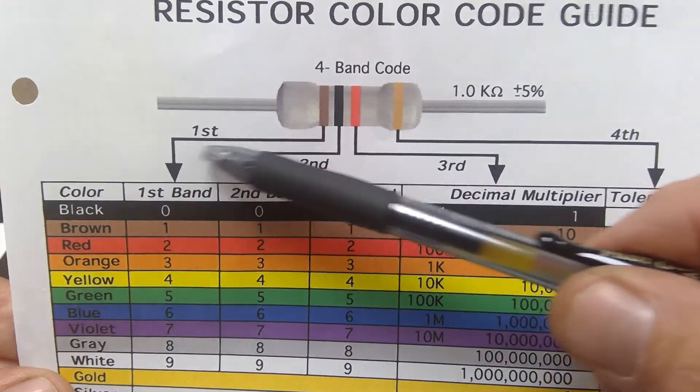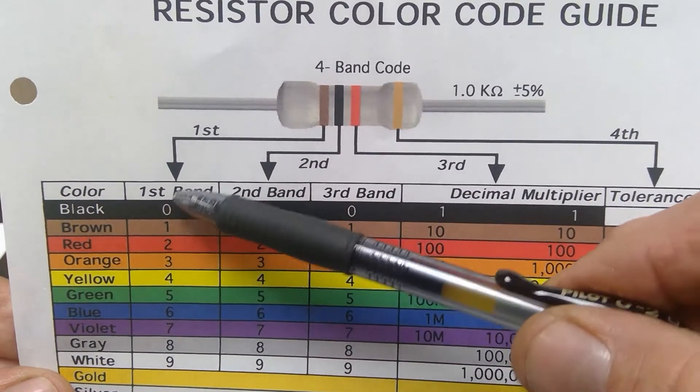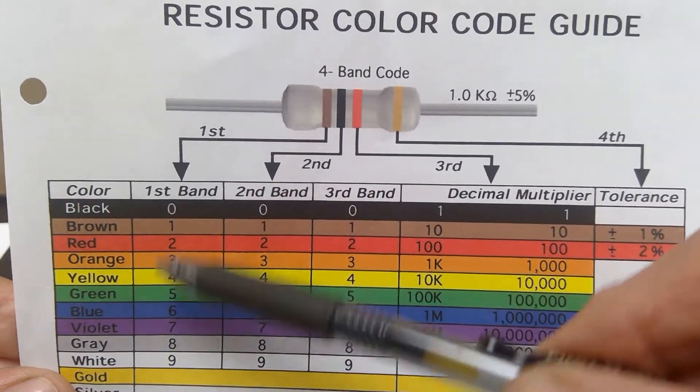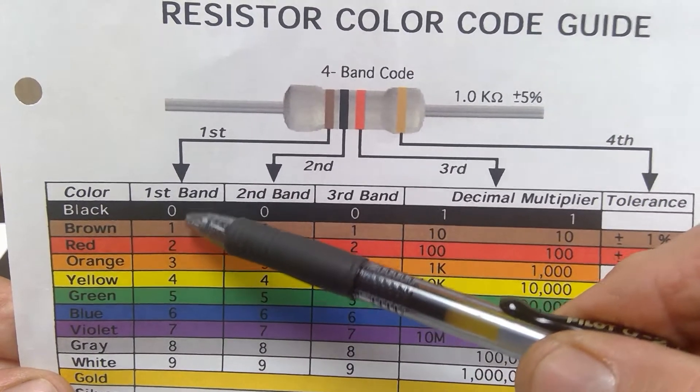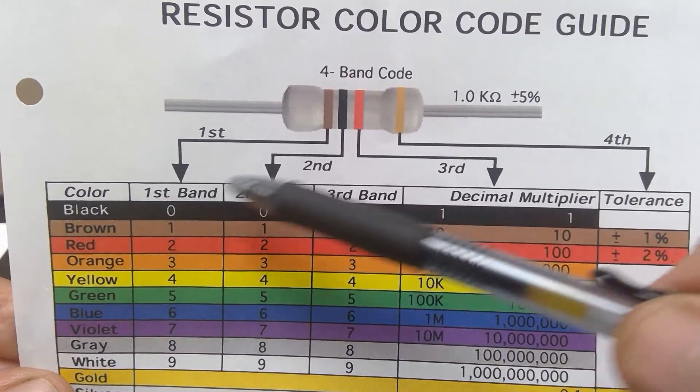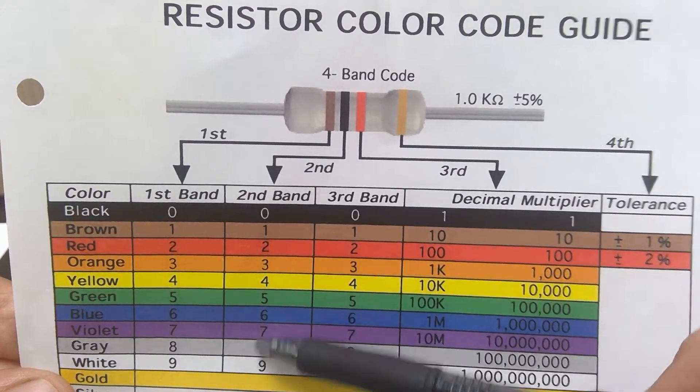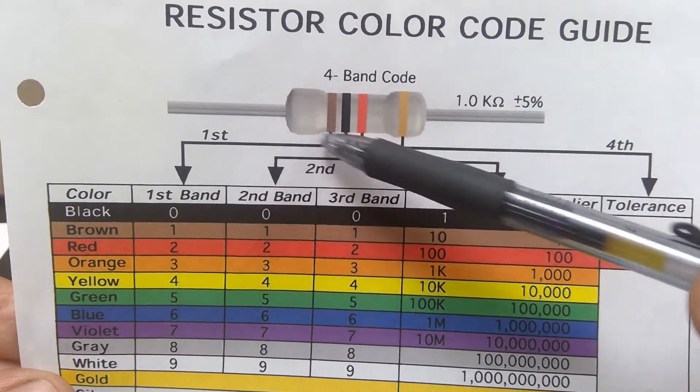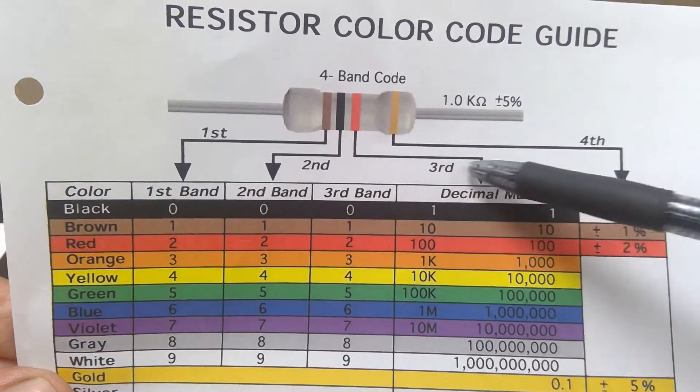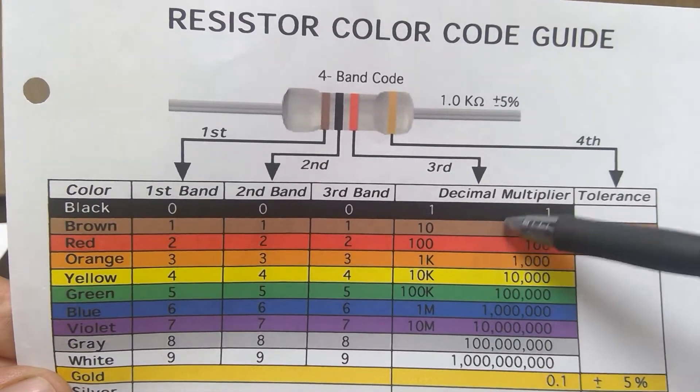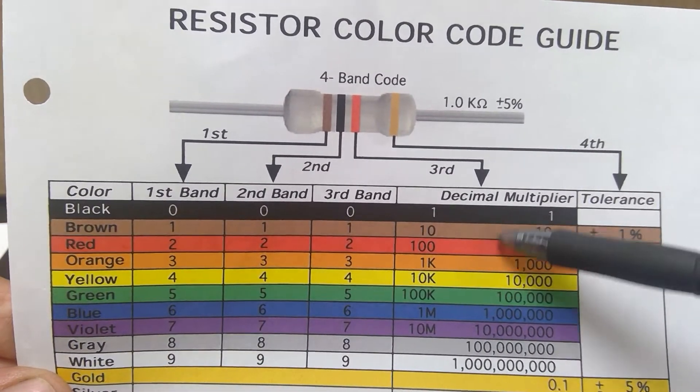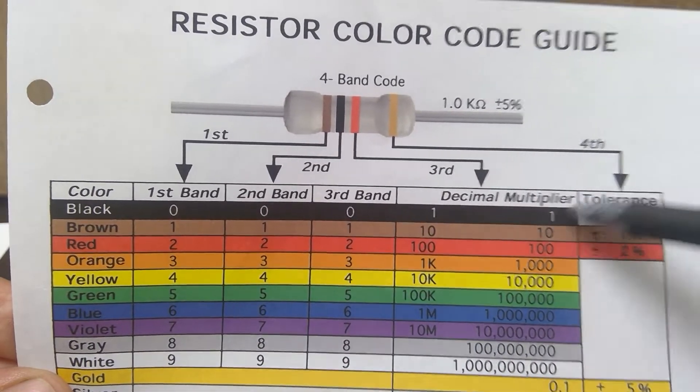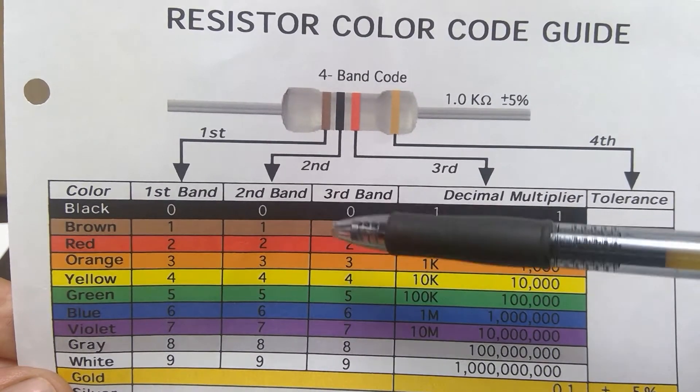So the first band here, whatever color that first band is, we're going to look in that first band column, and then the color in that row to determine what the number that we're going to write down is. Second band, same thing. Third band on a four band resistor like this, we're going to come over here to this column right here, which is a decimal multiplier column. Fourth band, we're going to talk about towards the end of the video.